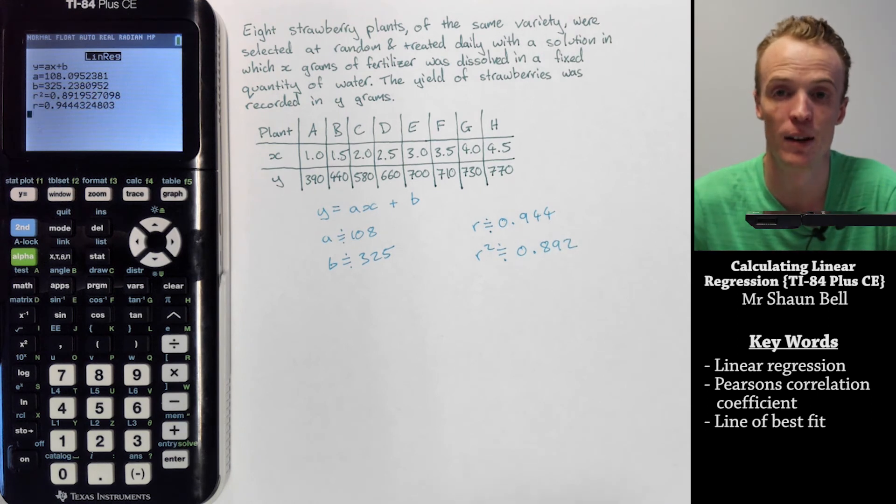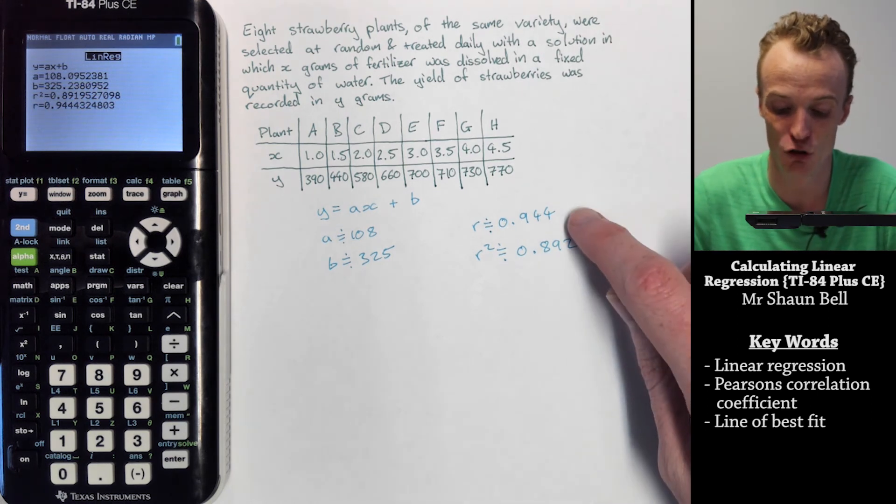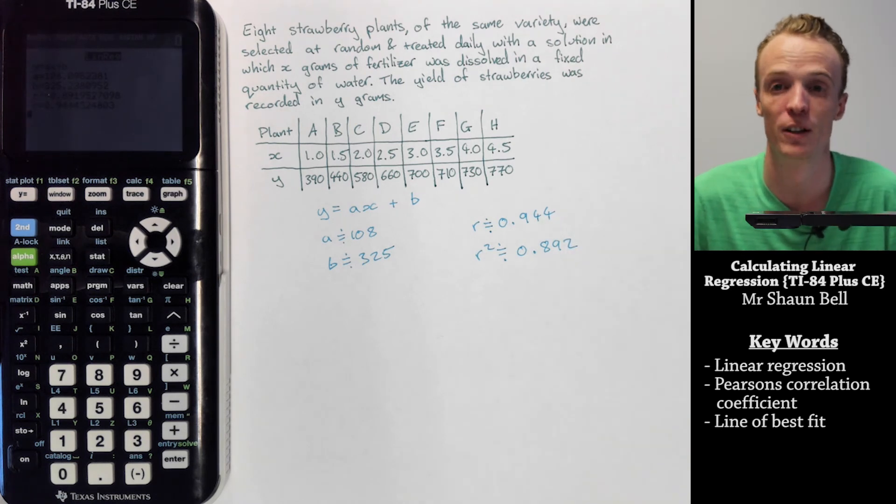Now what you can see here with Pearson's coefficient is there is a strong positive relationship, but it's not extremely strong.